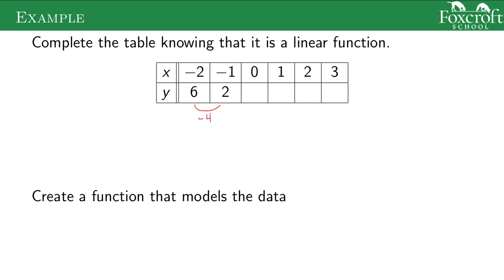To go from the first step to the second step, I have to subtract four, and I'm going to do the same thing every single step. So the next step I'd take two and subtract four to get negative two. Then subtract four to get negative six. Next step, subtract four and get negative ten. Next step, subtract four and get negative fourteen. So linear functions — you're adding or subtracting the same thing every single time.